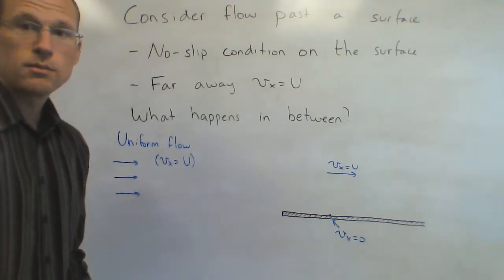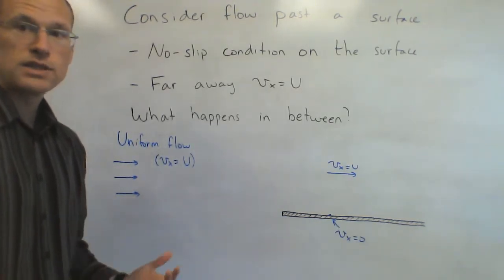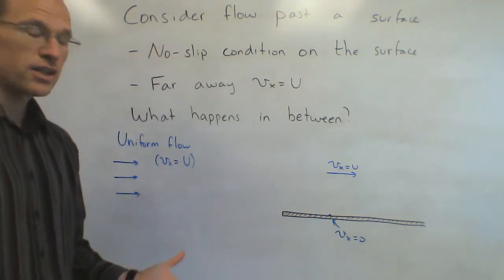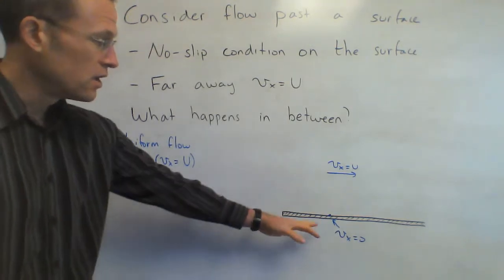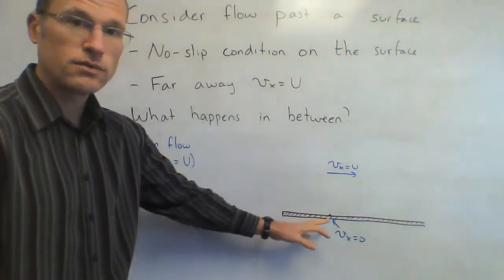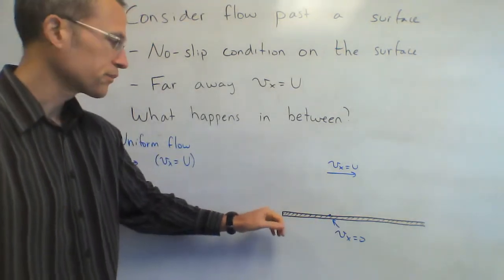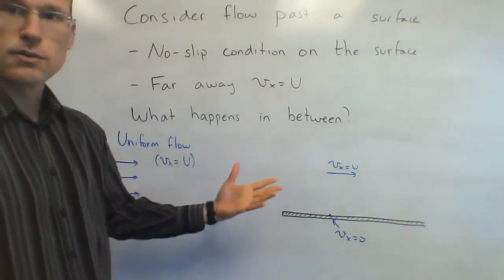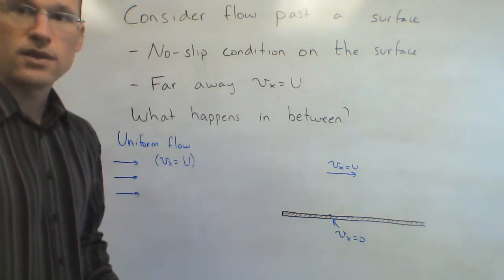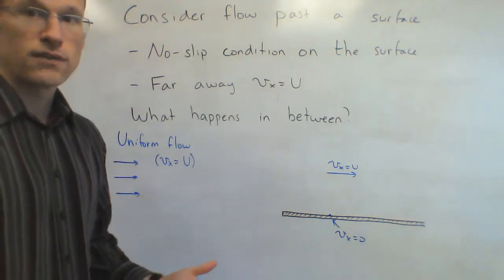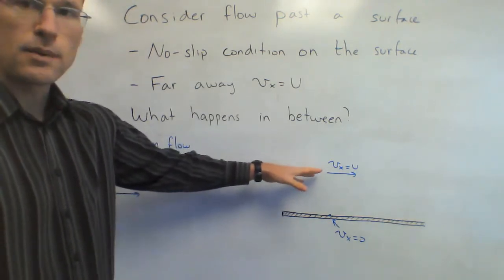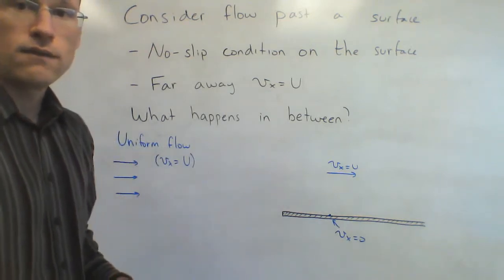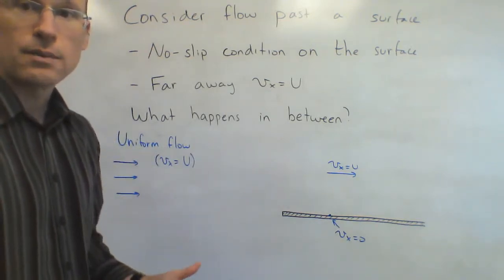On the surface of the plate, we have the no-slip condition. No-slip condition means I have zero velocity — whatever this flow velocity is, it slows down to zero on the surface of the plate. Far away from the plate, there's going to be some region where the flow doesn't really feel the plate, so far away from the plate I'm going to have the same uniform flow velocity, Vx equal to capital U.